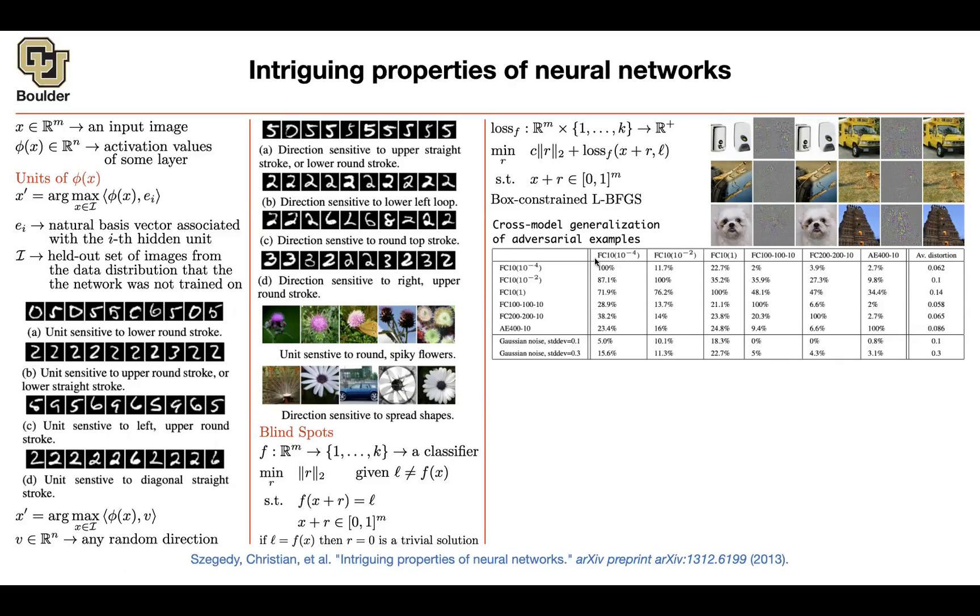With the neural network that you start with, you're going to be able to attack it and make it make 100% errors. But then the same attack is going to cause the other networks to make huge mistakes with a high probability. Any questions so far?